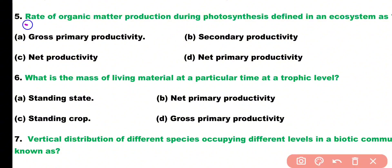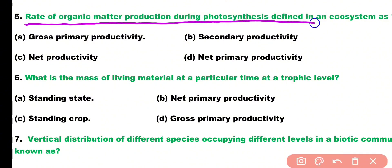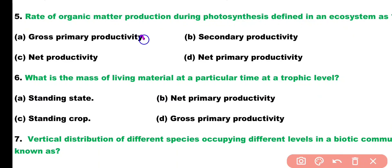Question number five. The rate of organic matter production during photosynthesis defined in an ecosystem as: gross primary productivity, secondary productivity, net productivity, or net primary productivity? Correct answer is option A. Rate of organic matter production during photosynthesis is termed as gross primary productivity within an ecosystem.